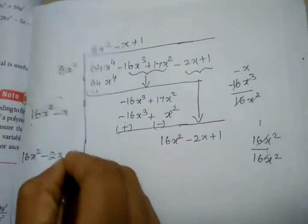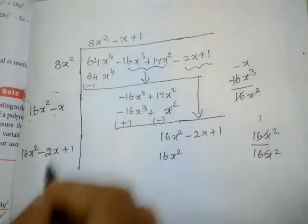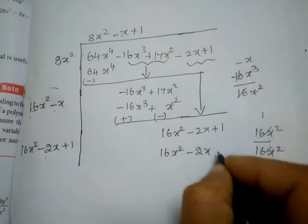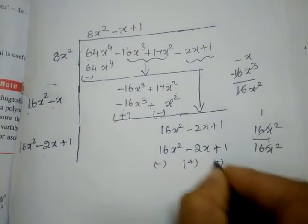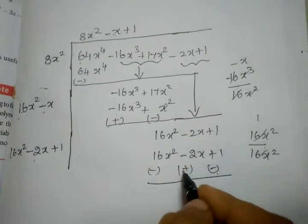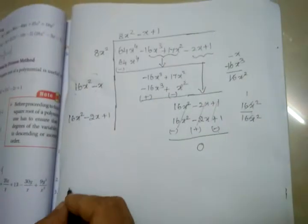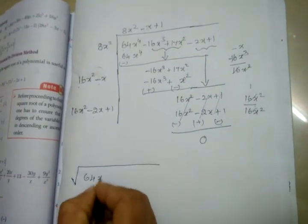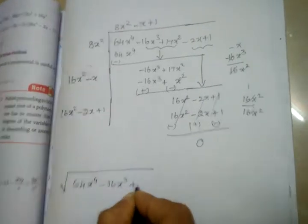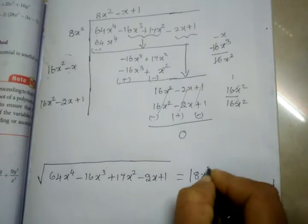Now we multiply: 1 into 16x square gives 16x square. 1 into minus 2x gives minus 2x. 1 into 1 gives plus 1. Now changing the sign: 16x square is cancelled, minus 2x plus 2x is cancelled, plus 1 minus 1 is cancelled. So the remainder is zero. The square root of 64x power 4 minus 16x cube plus 17x square minus 2x plus 1 is found.